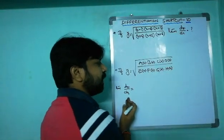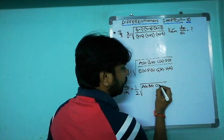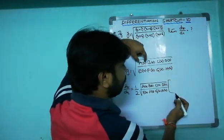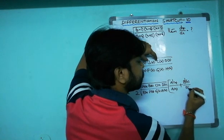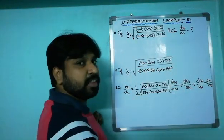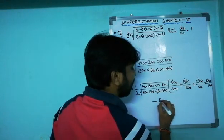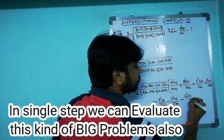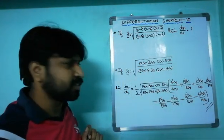The shortcut: dy/dx = (1/2) · √[a(x)·b(x)·c(x)·d(x) / (e(x)·f(x)·g(x)·h(x))] · [a'(x)/a(x) + b'(x)/b(x) + c'(x)/c(x) + d'(x)/d(x) − e'(x)/e(x) − f'(x)/f(x) − g'(x)/g(x) − h'(x)/h(x)]. Numerator functions get positive signs; denominator functions get negative signs.